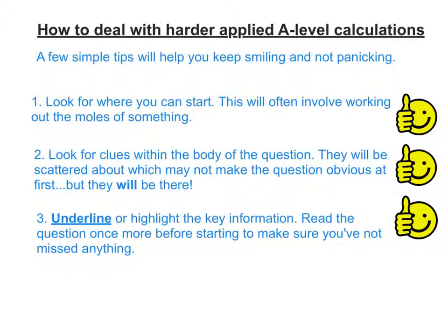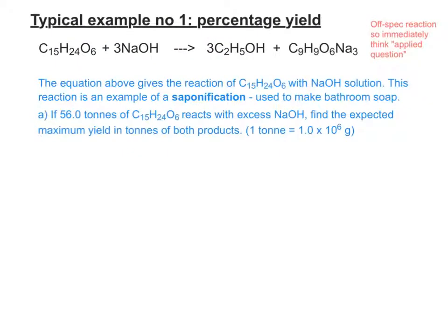The first type of harder question you'll come across is percentage yield. Here's a typical one — it's obviously an aspect reaction because you don't have to do saponification or salt-making reactions for OCR; it'll be nowhere in the spec. So first thing: take a couple of deep breaths and think, okay, they've given me a reaction I'm not likely to have seen before, and therefore I have to think about it a little bit.